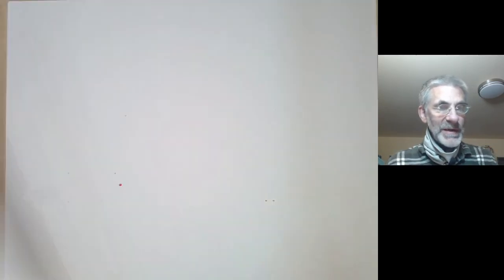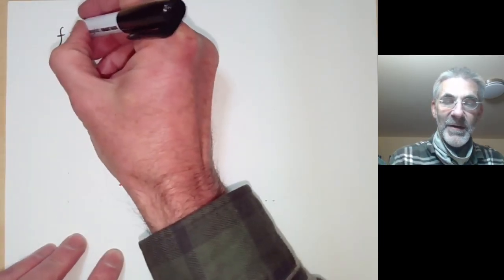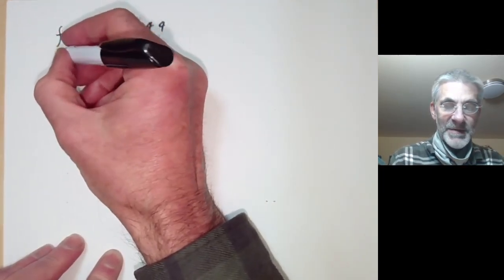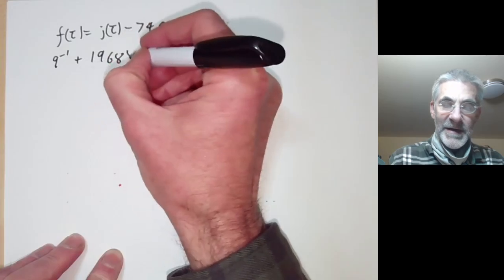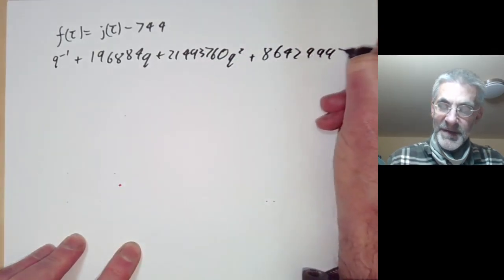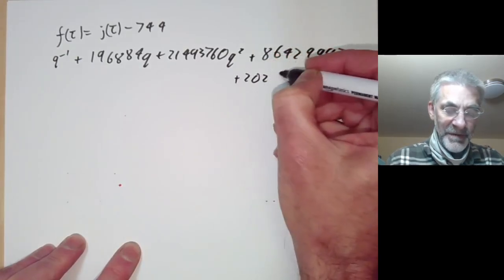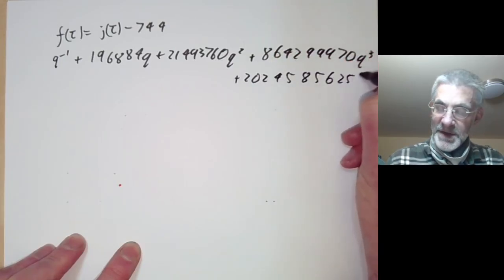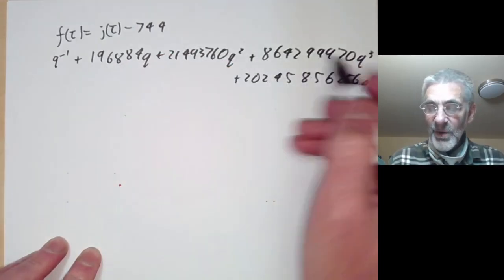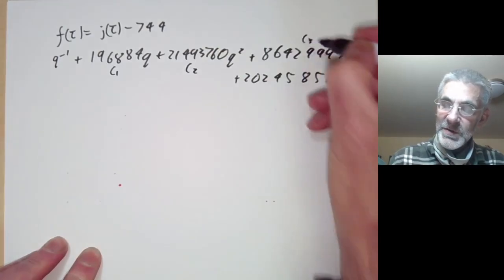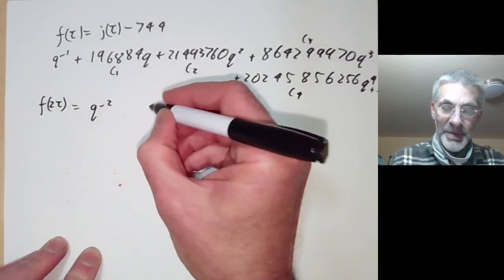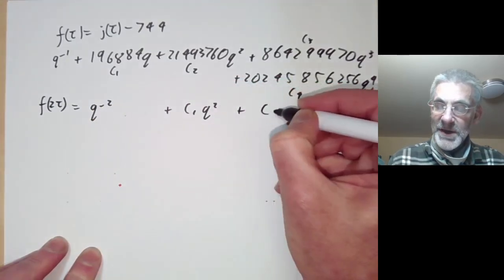Let's see what it looks like in a particular example. I'll take f(τ) to be j(τ) with its constant term removed, and look at the Fourier series expansion: q⁻¹ + c₁q + c₂q² + c₃q³ + c₄q⁴ + ..., where c₁ = 196884, c₂ = 21493760, c₃ = 864299970, c₄ = 20245856256. Then f(2τ) is q⁻² + c₁q² + c₂q⁴ + ...